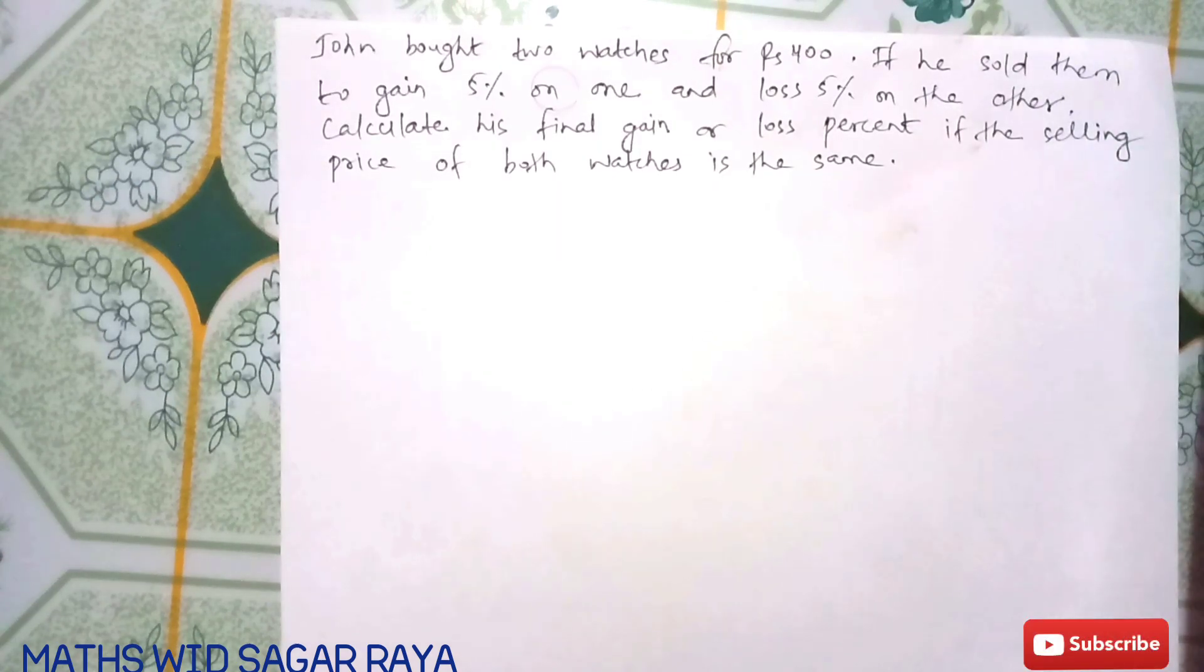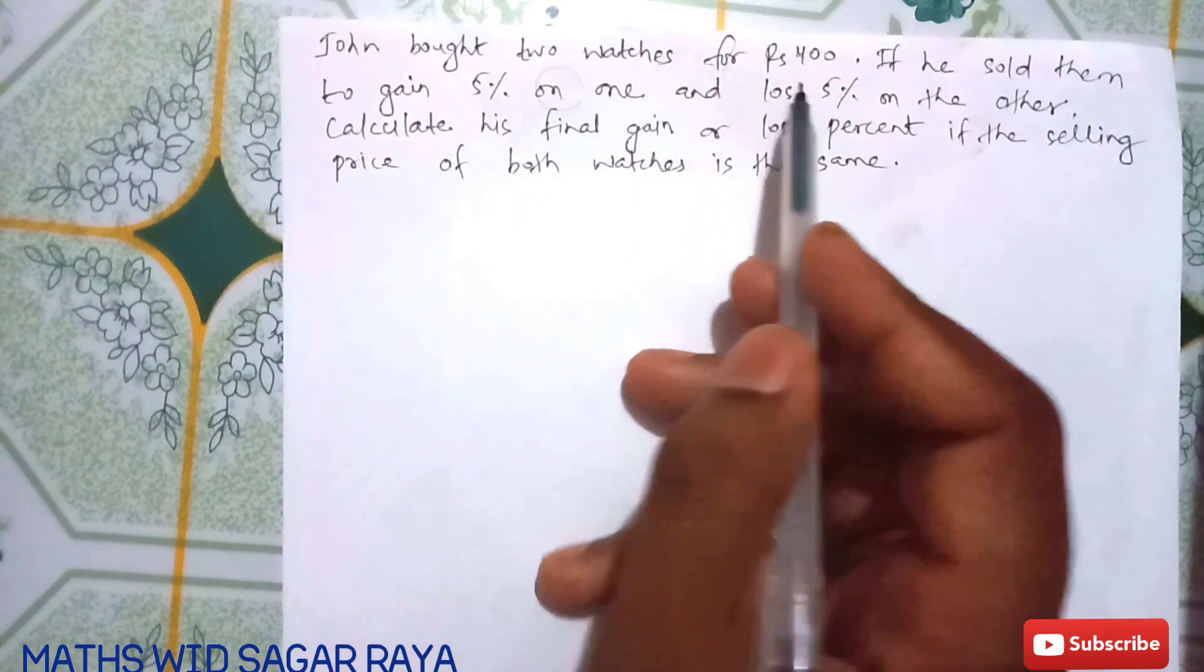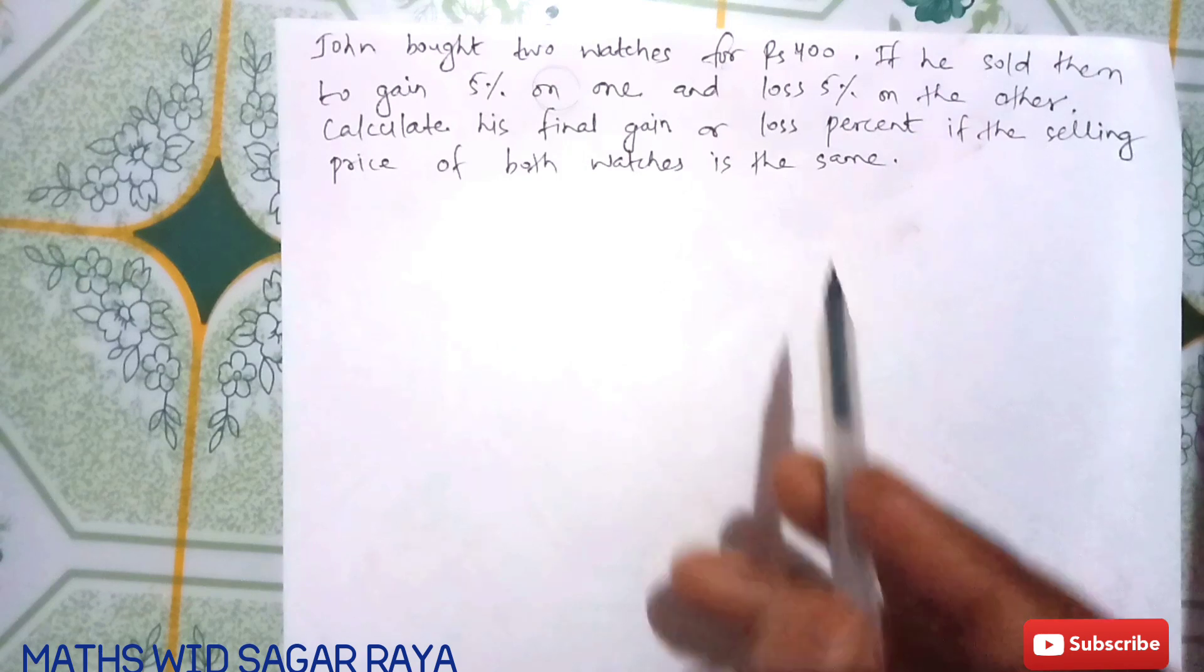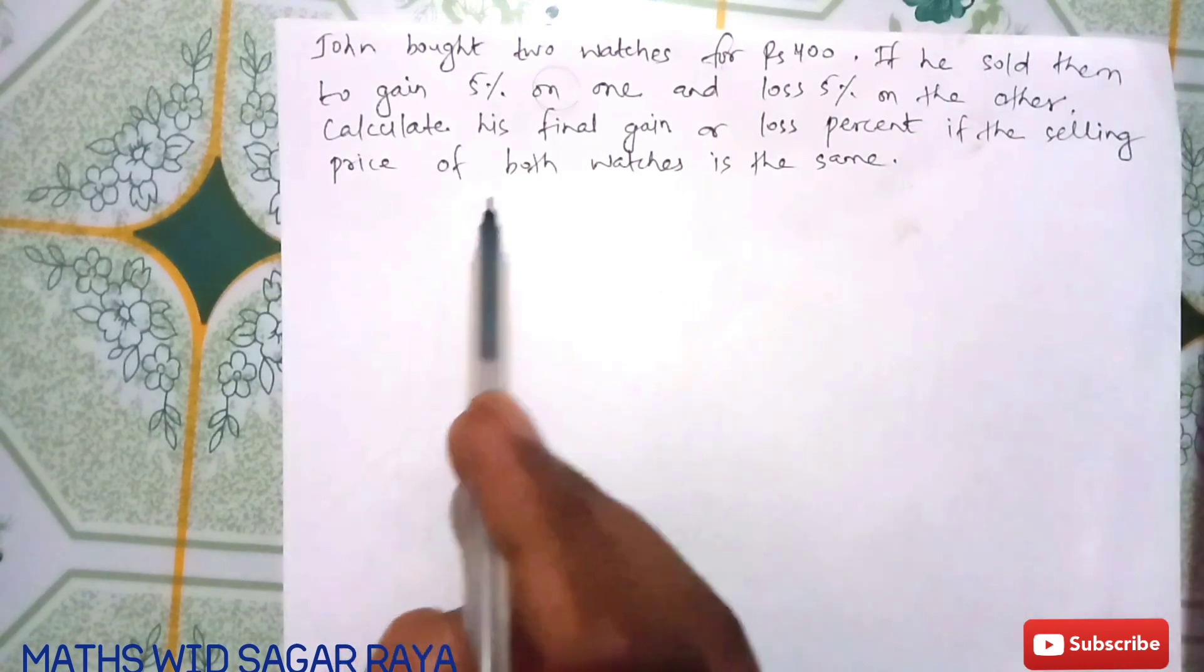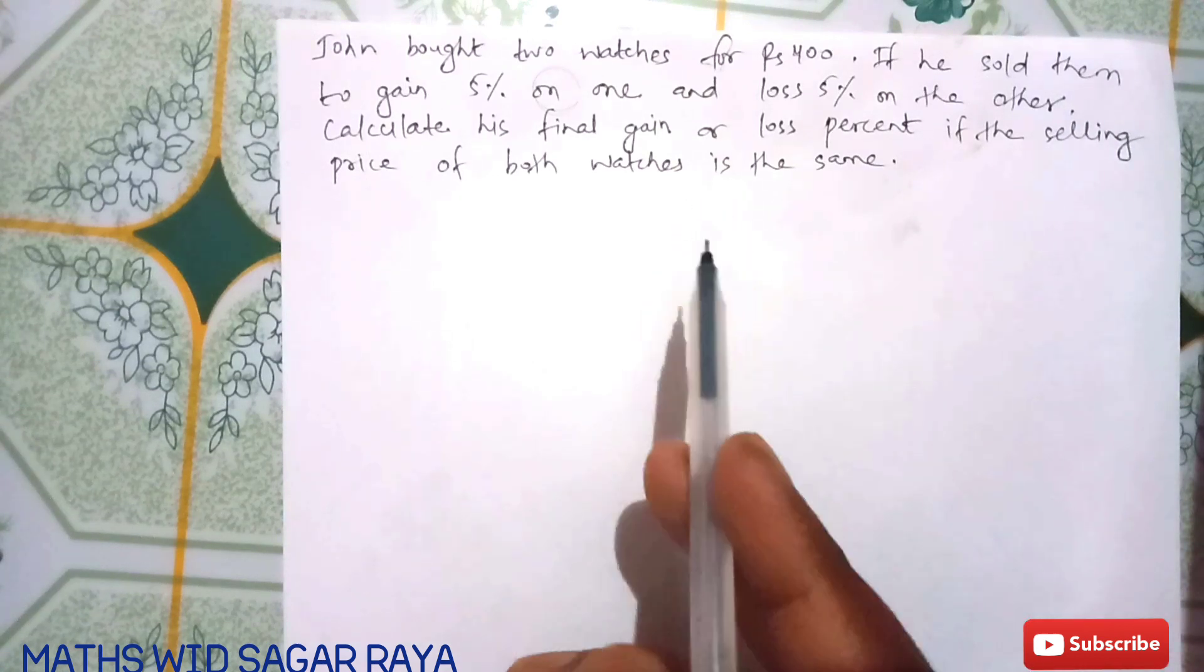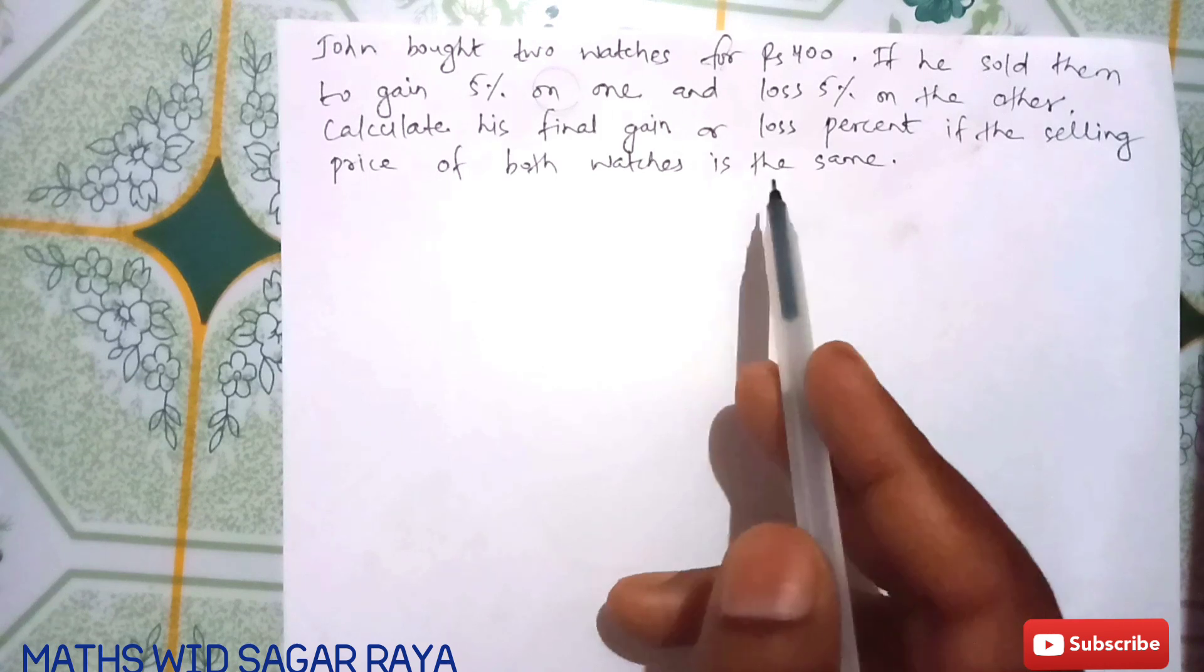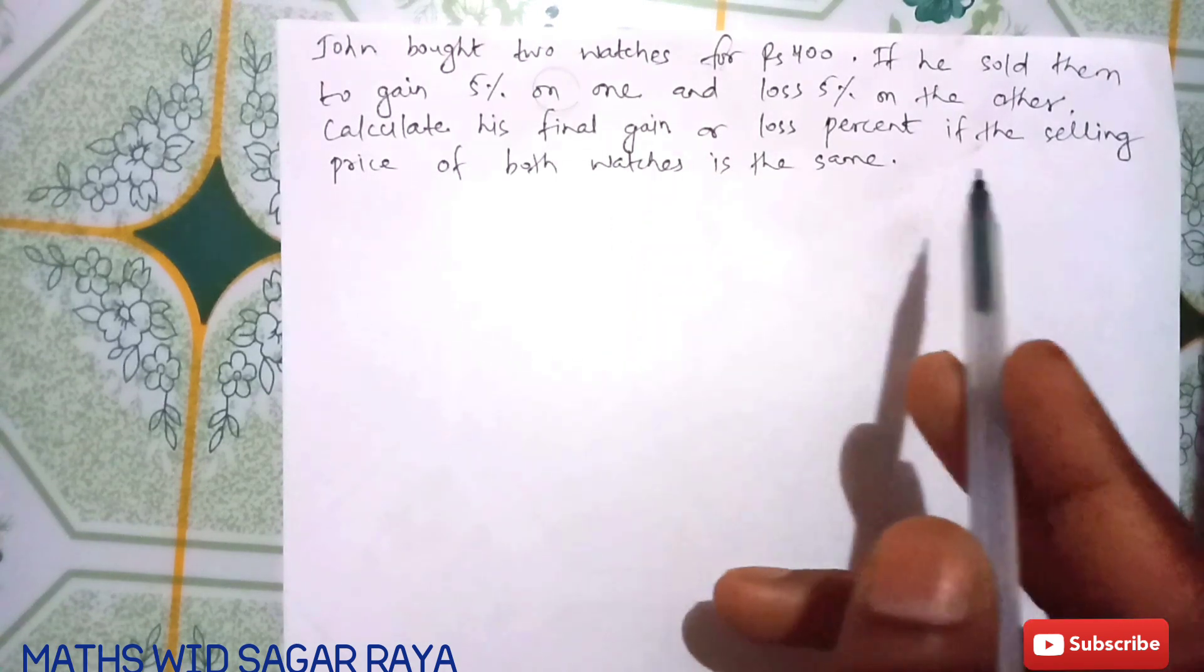Let's start with this question, one of the most important questions in profit and loss. John bought two watches for rupees 400. If he sold them to gain 5% on one and loss 5% on the other, calculate his final gain or loss percent.